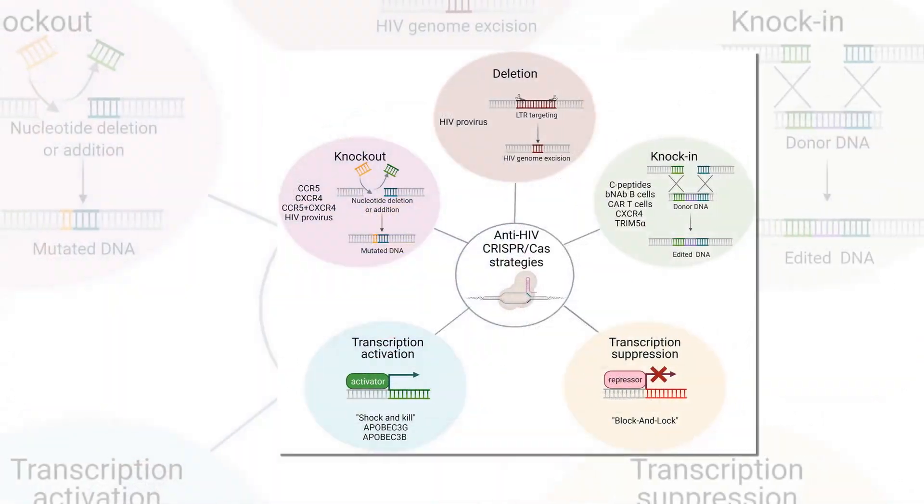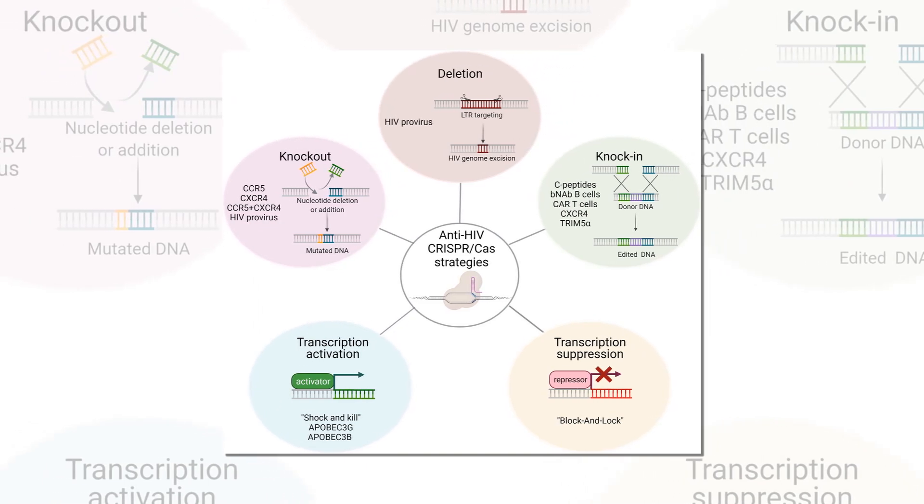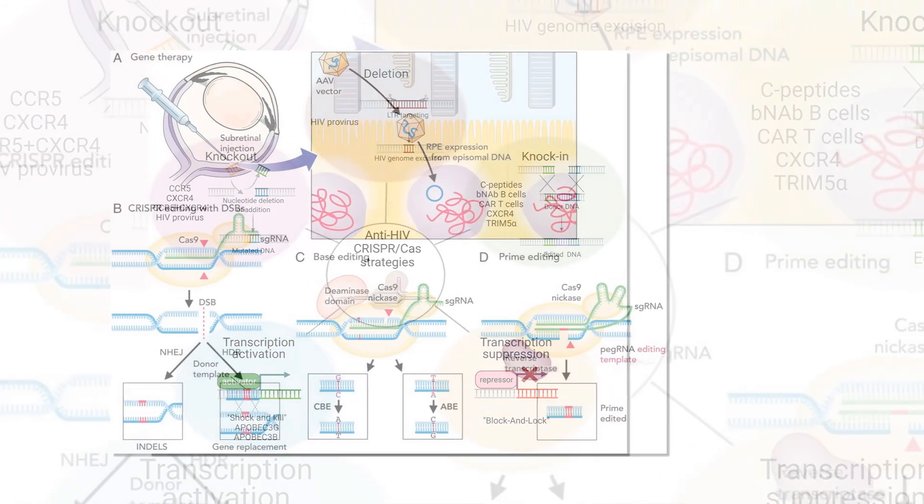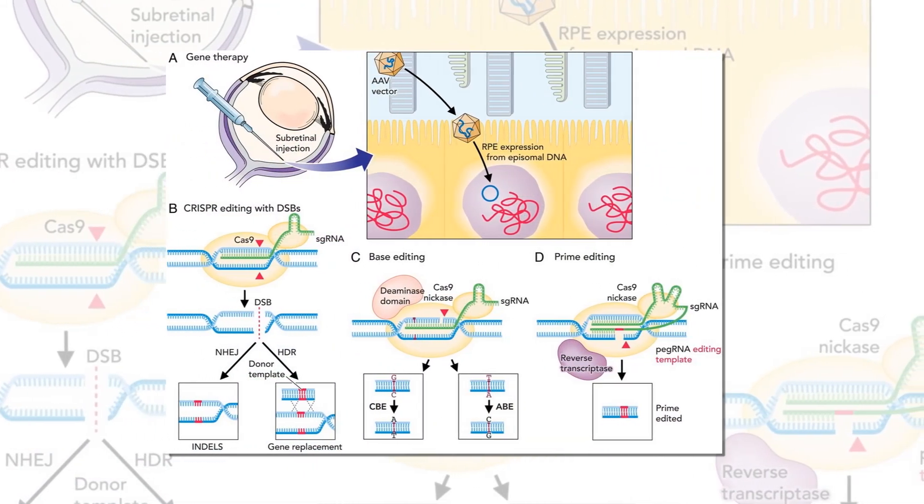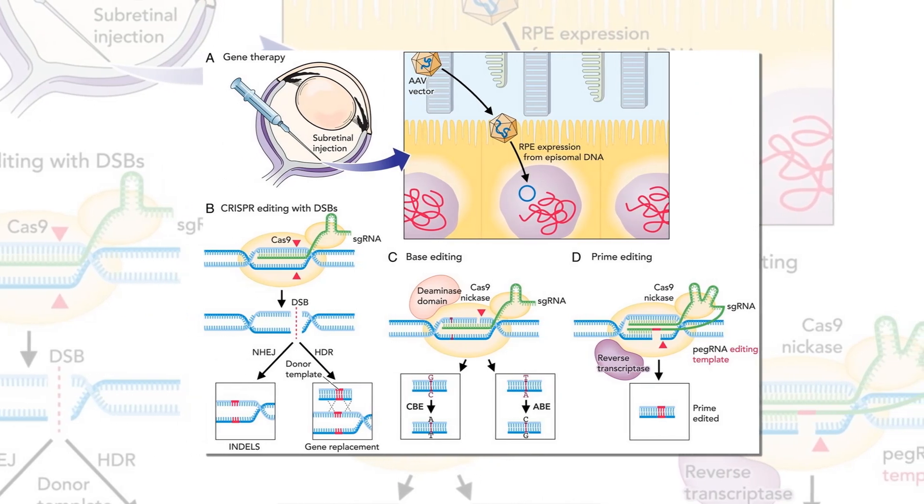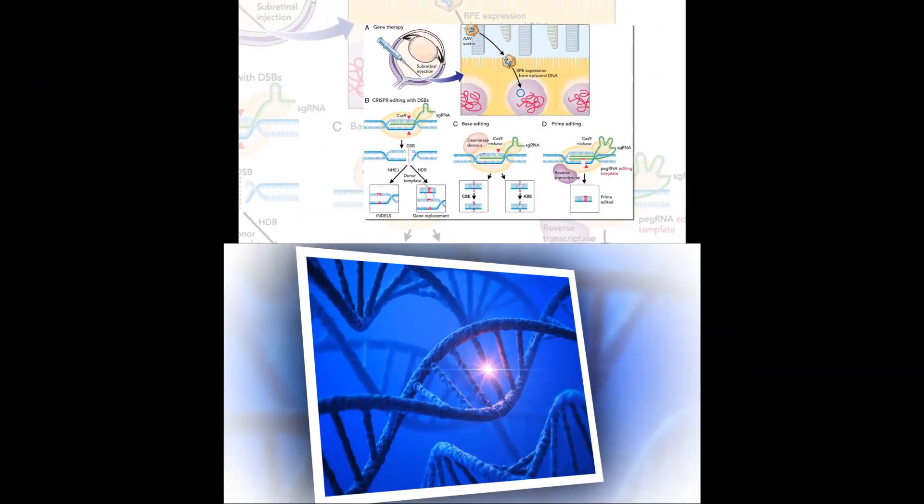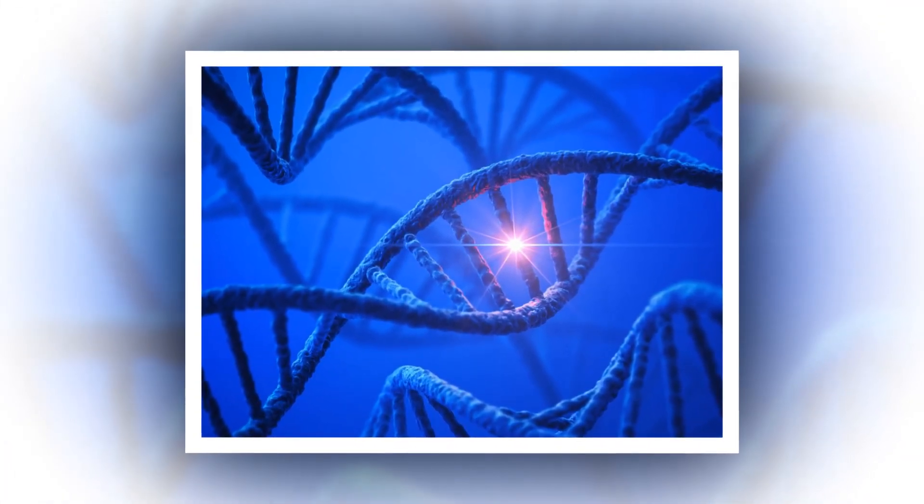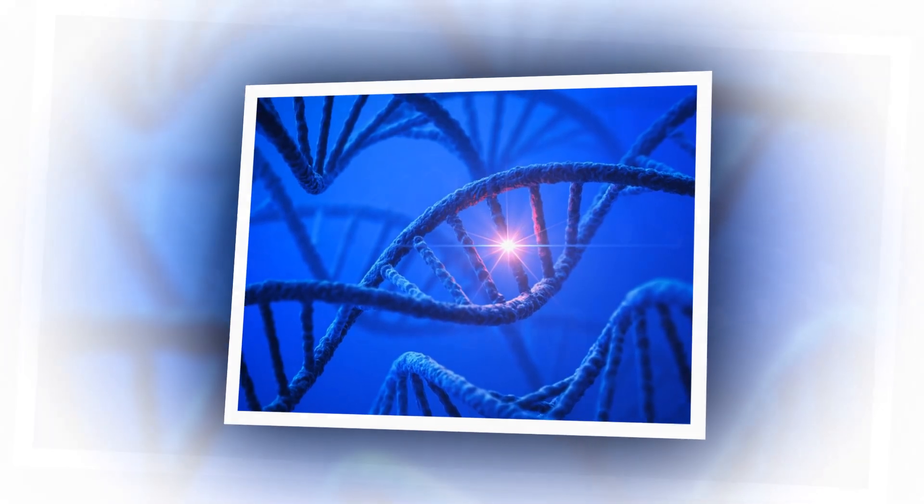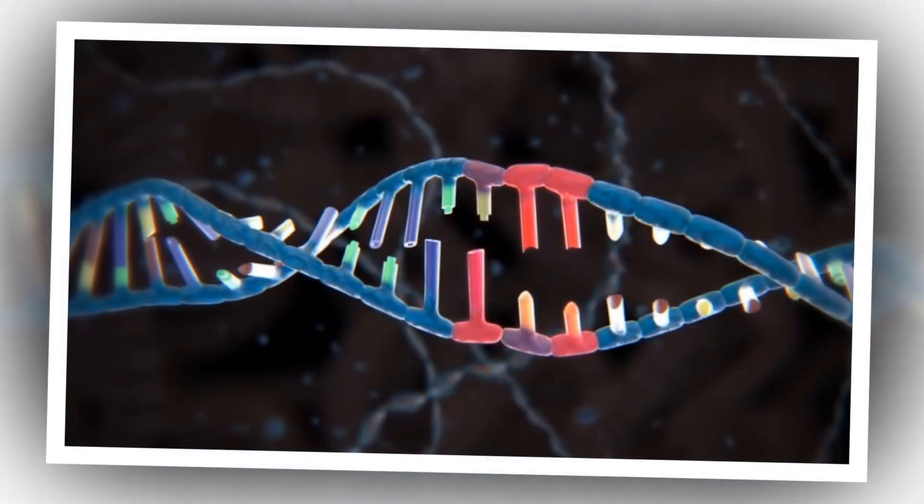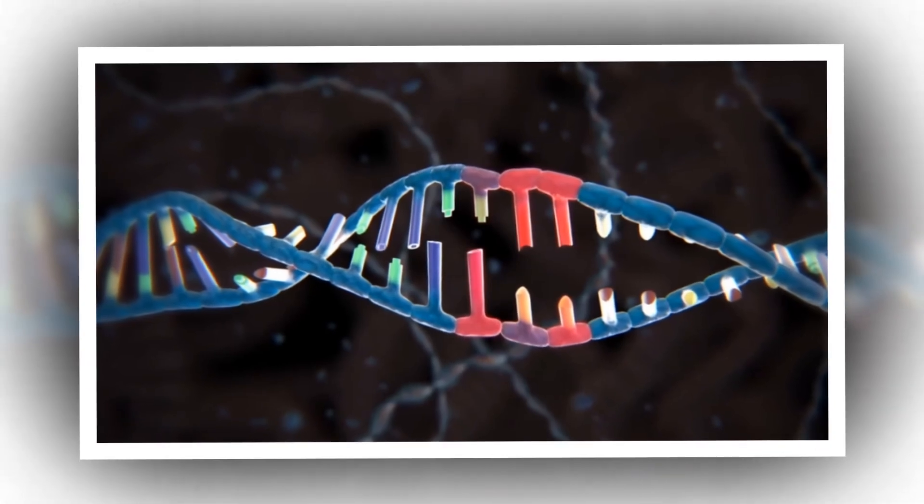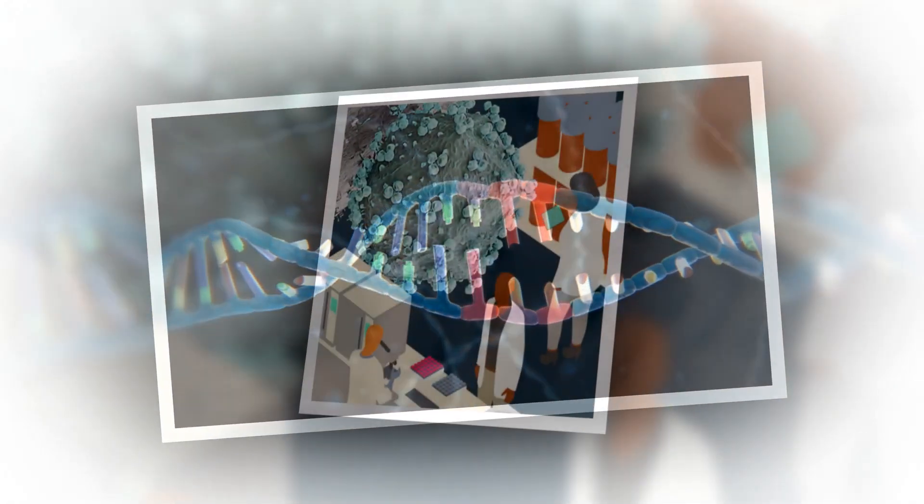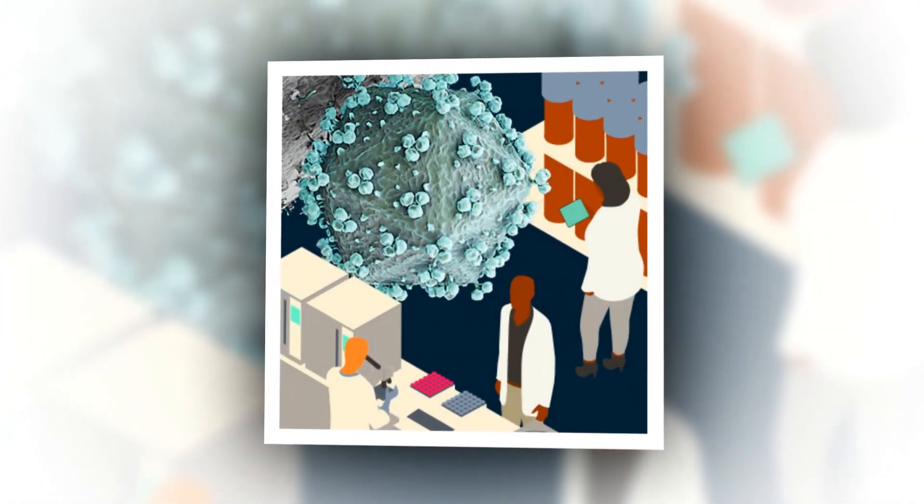This is the result of decades of work by the research team led by VGTI Associate Director Louis Picker, MD, and Professors Klaus Fru, PhD, and Scott Hansen, PhD. The group has been working on developing this vaccine platform since the early 2000s, and in 2016, their OHSU startup company, TomegaVax, was acquired by San Francisco-based VIR Biotechnology. The company is currently testing the platform in a human clinical trial for HIV, together with the National Institutes of Health and the Bill and Melinda Gates Foundation.